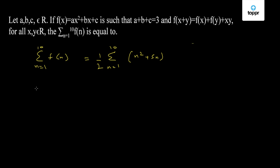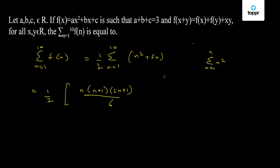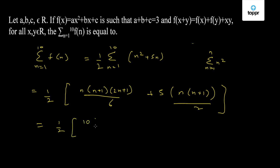We can take the 1/2 out of the summation. This equals half of [n(n+1)(2n+1)/6], which is the summation of n² from 1 to n, plus 5 times [n(n+1)/2], the summation of n. Substituting n = 10, we have: (10 × 11 × 21)/6 + 5 × (10 × 11)/2.